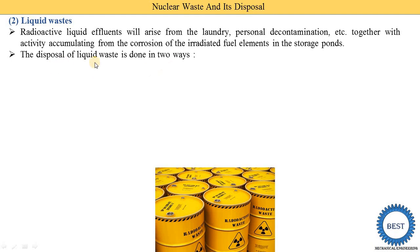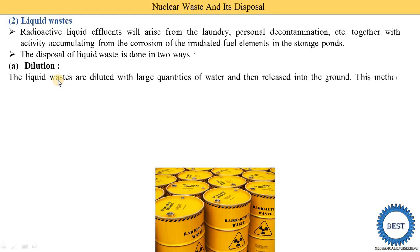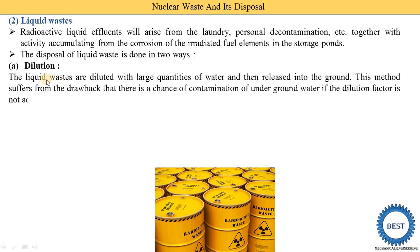The disposal of liquid waste is done in two ways. The first is dilution — the liquid waste is mixed with a large quantity of water so its intensity is reduced, and then released into the ground. This method suffers from the drawback that there is a chance of contamination of underground water if the dilution factor is not adequate — meaning if sufficient water is not provided, the dilution factor is too low, and underground water may become contaminated with radioactive material, which is harmful to humans and the environment.